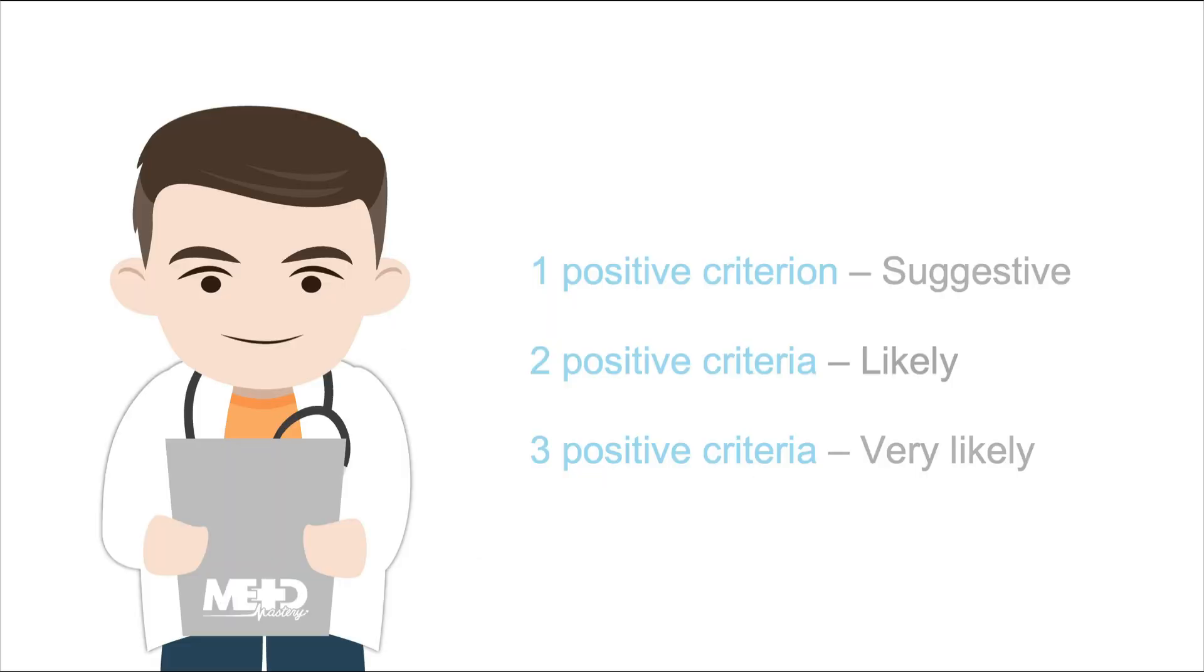When evaluating an ECG for the presence of right ventricular hypertrophy, I suggest you use this approach. If just one of these RSS criteria is positive, that's very suggestive. If you have two that are positive, it's likely, and if you have three, that's very, very likely that right ventricular hypertrophy is truly present.